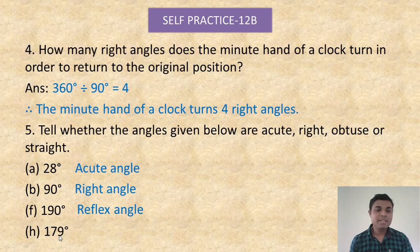179 degrees — it is less than 180 degrees, so it is an obtuse angle. Is that clear?